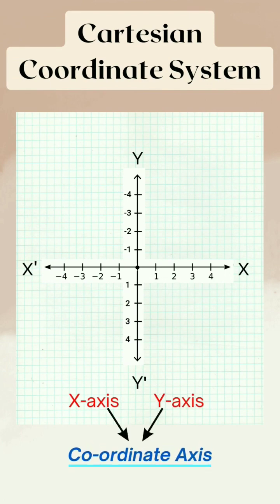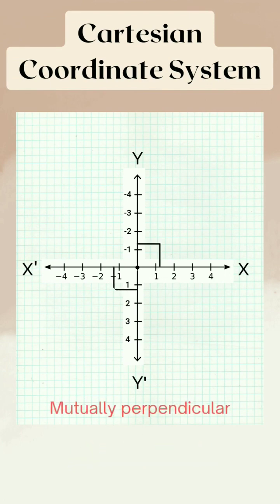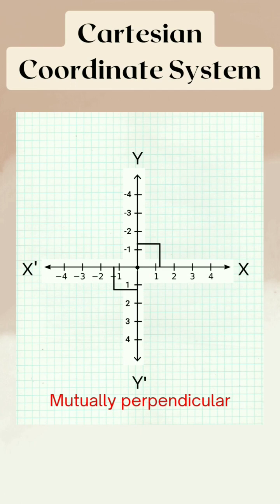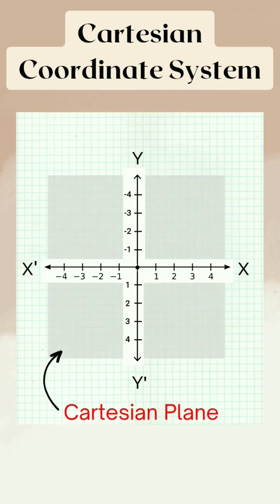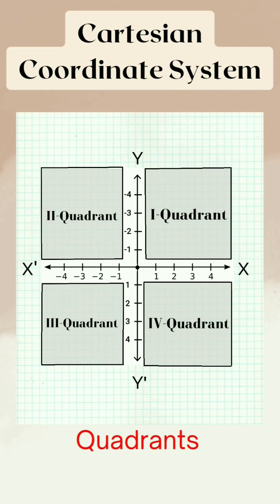These two coordinate lines are called coordinate axis. They both are mutually perpendicular to each other and they form a plane which is known as Cartesian plane that divides the plane in four equal parts known as quadrants.